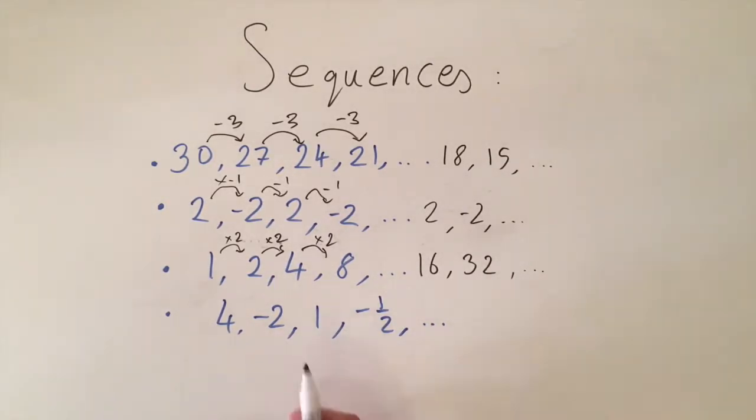And for the final sequence this is a bit more interesting because we've actually got two operations at play here. So you can see that the sign of the terms are changing at each number so plus, negative, plus, negative and the numbers are also getting smaller so you get 4, -2, 1 and -1/2.